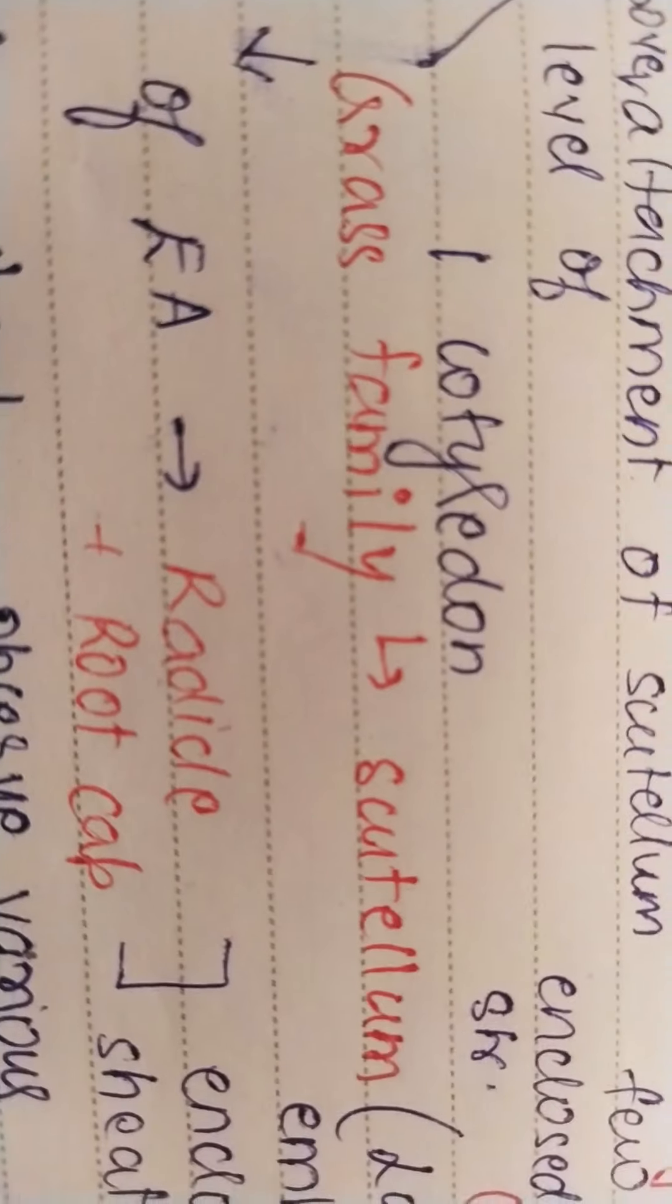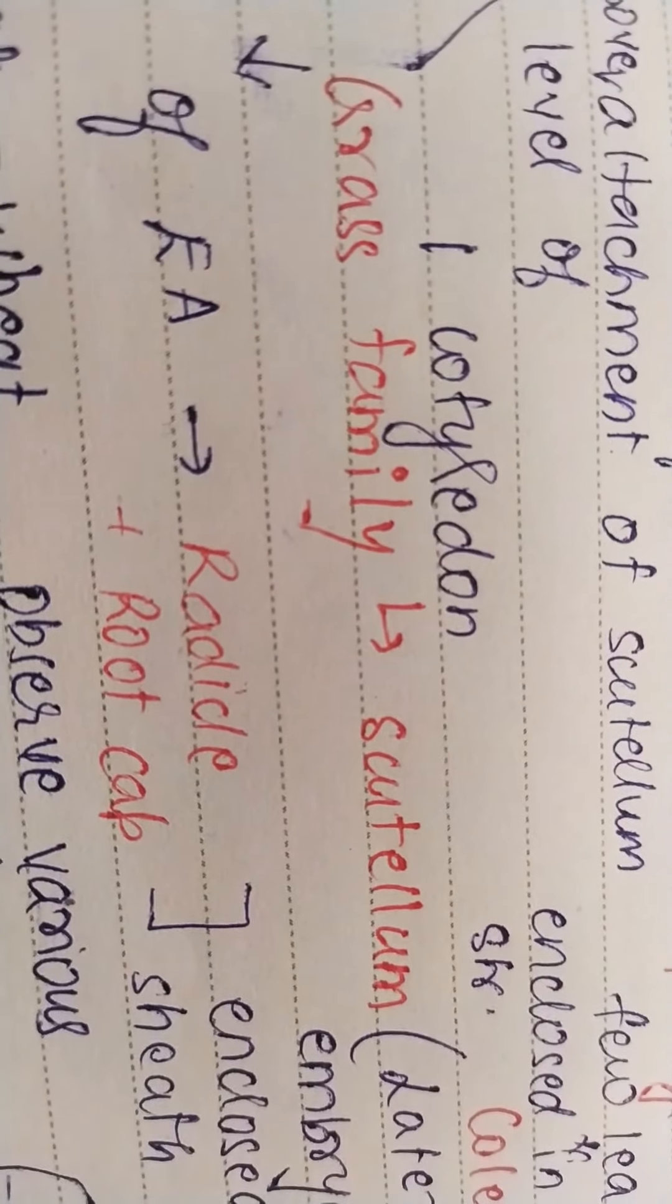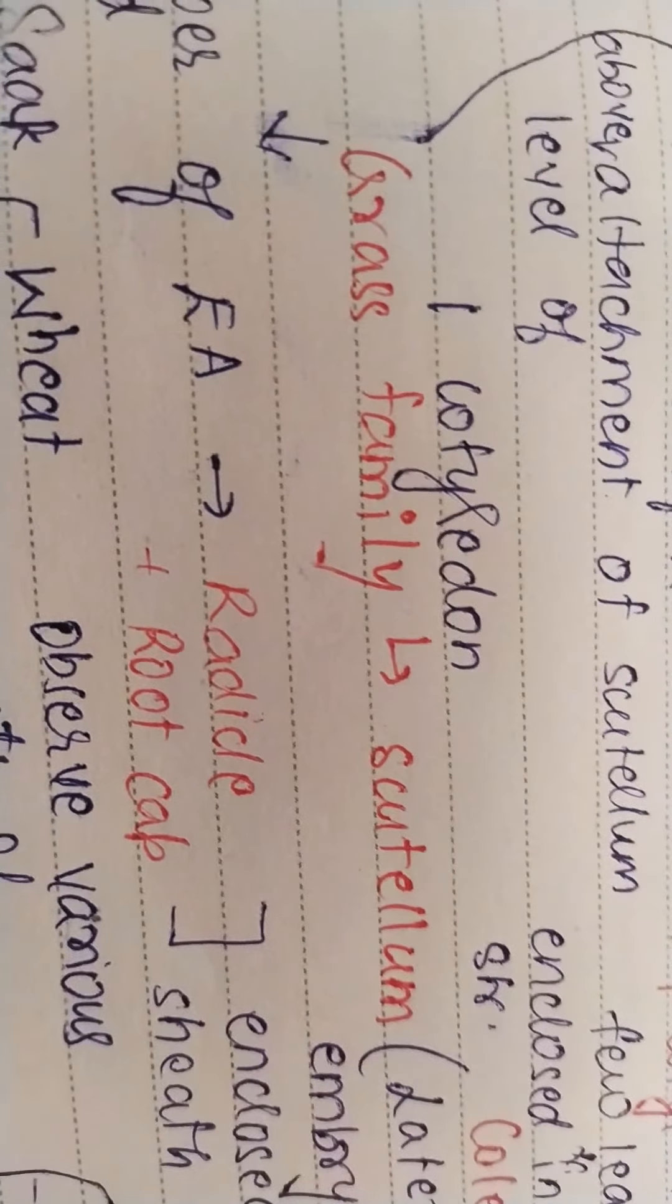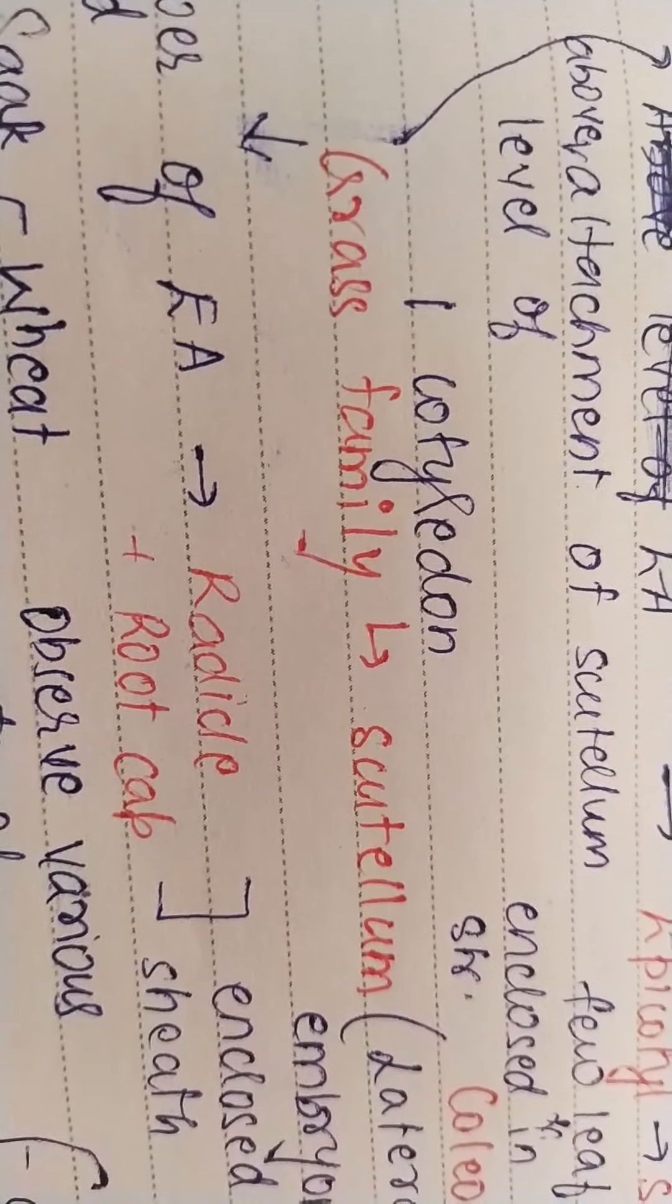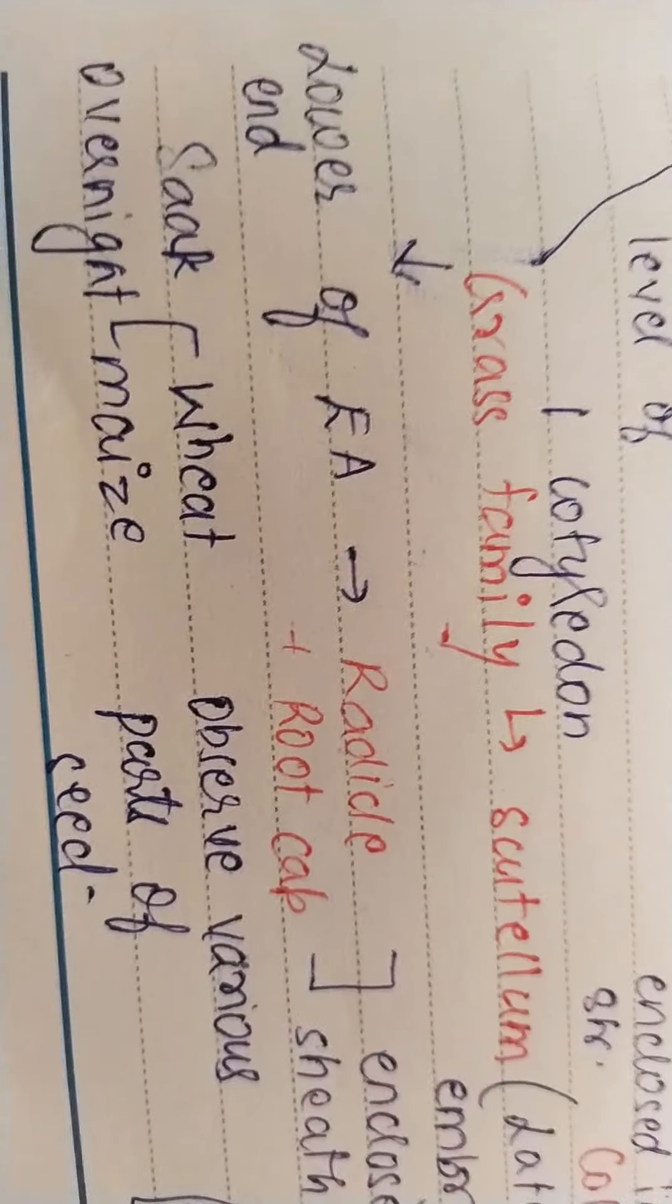Now what happens in a monocot embryo? So monocot embryo is having only one cotyledon. In grass family, that is Gramineae, you call it as scutellum - grass family means wheat, rice, maize, etc., all the cereals.